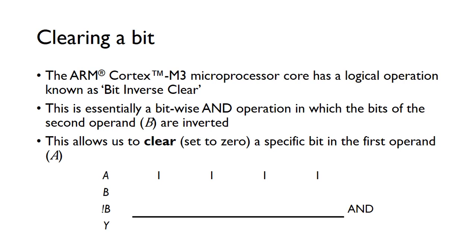For B, we would just use a one. Whichever bit in B is a one, that's the bit that we're going to clear in A. To clear this bit, we set a one in that column in B.